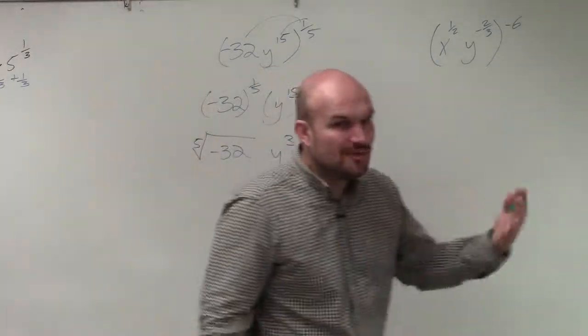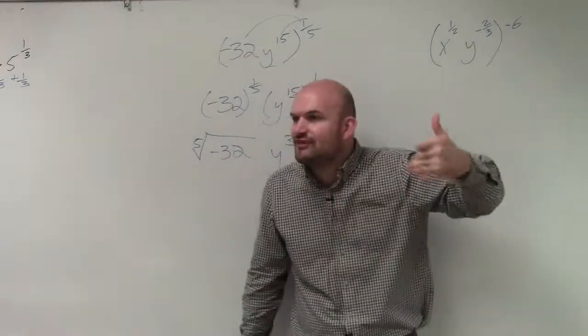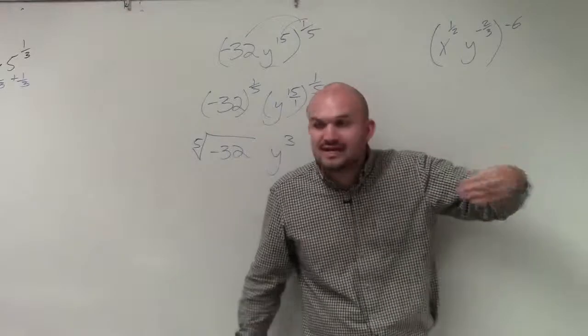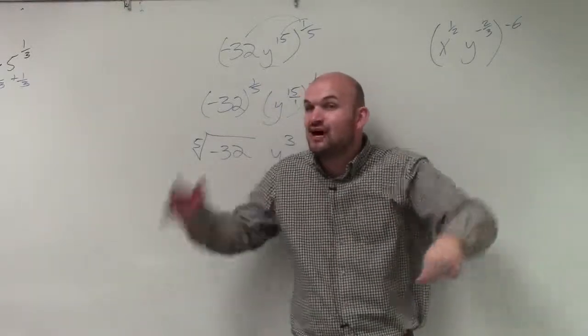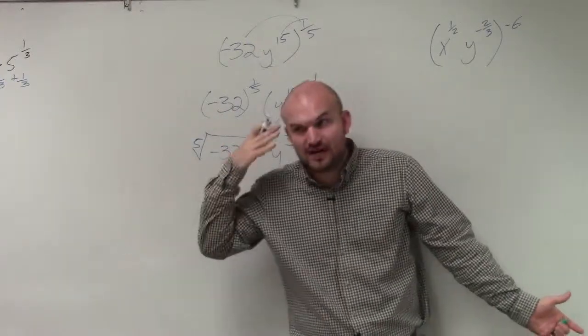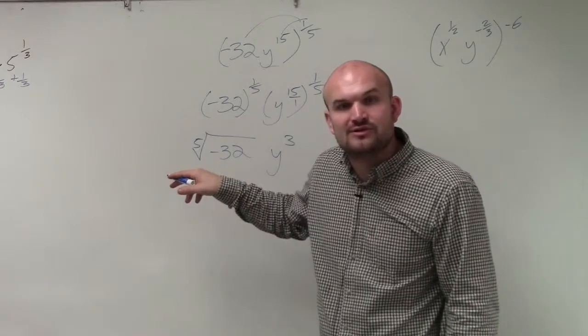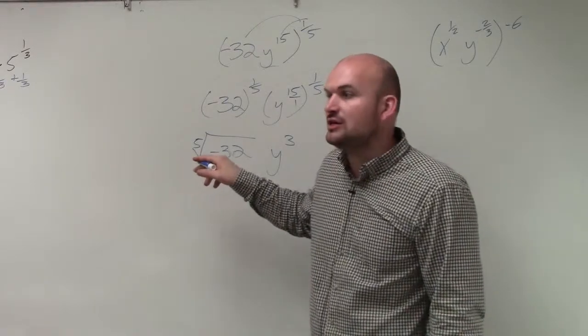All right, so you might not say, well, I don't know what the fifth root is. Well again, think about what does the fifth root say. The fifth root says what number is multiplied by itself five times, right? Well, to determine that, if I can't think of it off the top of my head, you can always break this down. What we learned how to simplify was by using the factor tree.